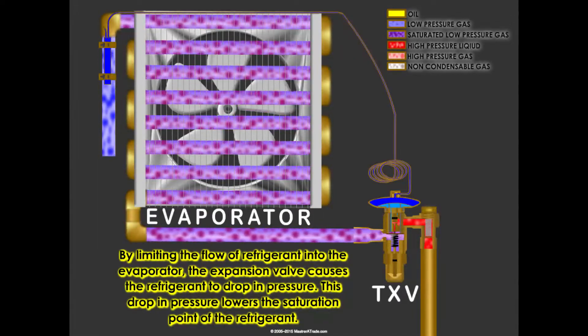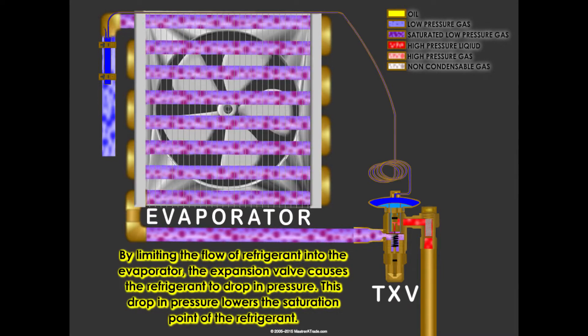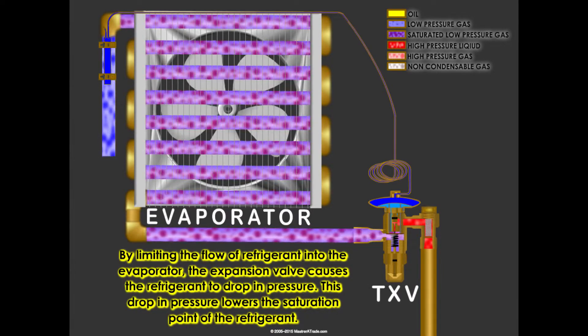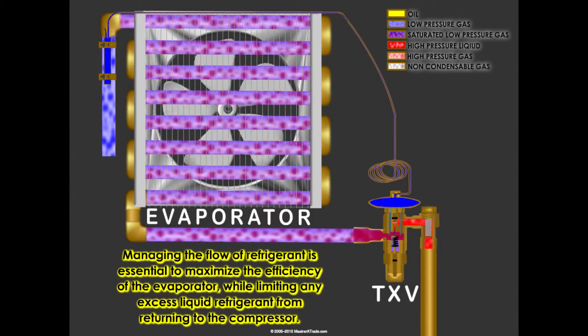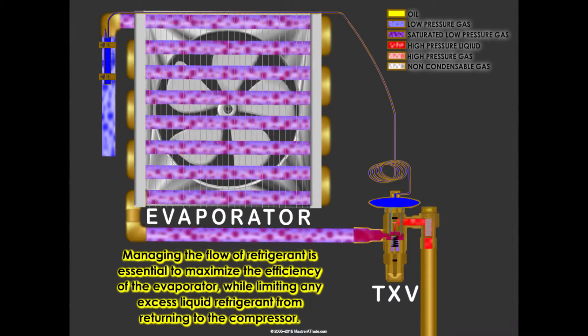By limiting the flow of refrigerant into the evaporator, the expansion valve causes the refrigerant to drop in pressure. This drop in pressure lowers the saturation point of the refrigerant. Managing the flow of refrigerant is essential to maximize the efficiency of the evaporator while limiting any excess liquid refrigerant from returning to the compressor.